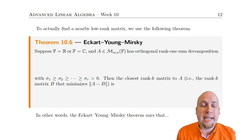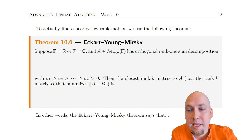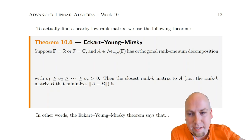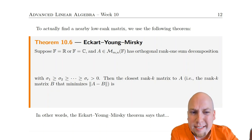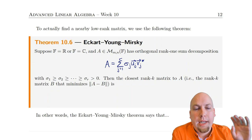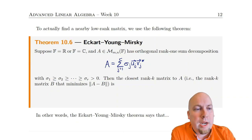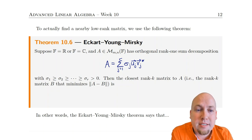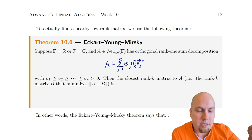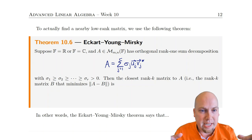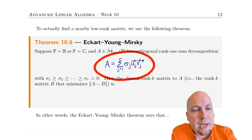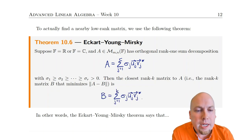So how do we find this nearby low-rank matrix? Suppose you've got some matrix — real or complex entries, it doesn't even have to be square; it can be rectangular as well. What we do is start with the orthogonal rank-one sum decomposition of our matrix, which has rank R. Then to find the closest rank-K matrix to A, all you do is truncate that decomposition: take the first K terms in the sum. You have to be careful to order the singular values in the usual way — sigma_1 largest, sigma_2 second largest, and so on.